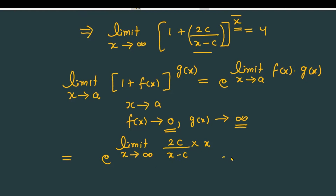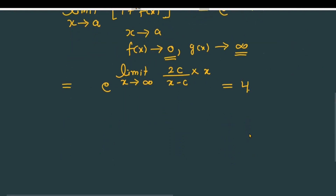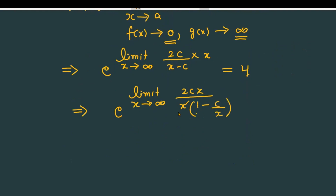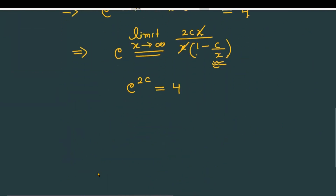The limit of this function is given as 4. Further simplifying: e raised to the power [limit x approaching to infinity of 2cx over (x minus c)]. Taking x common from the denominator, this becomes 2c over (1 minus c upon x). As x tends to infinity, c upon x tends to 0 — again finite upon infinity. So this simplifies to e raised to the power 2c, and this quantity equals 4.